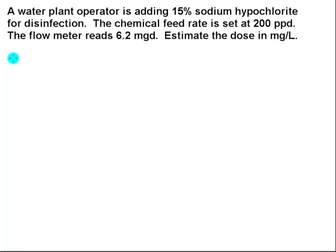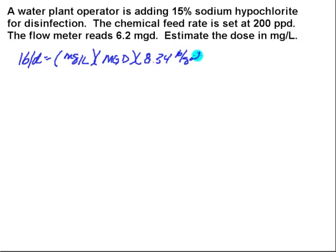Estimate the dose in milligrams per liter. Since I'm doing a chemical feed rate problem, I know that I need my pounds per day formula. Pounds per day equals the milligrams per liter of dose times the flow rate in million gallons per day times 8.34 pounds per gallon, all of that divided by the percent available chlorine.